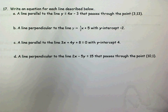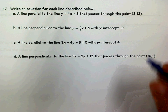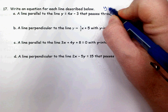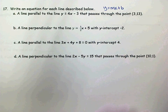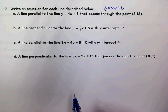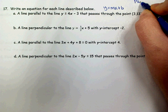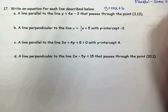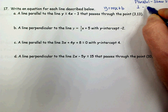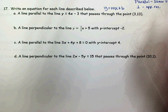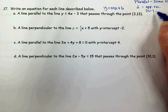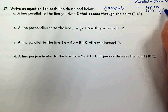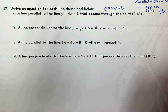On number 17, all four parts, you're writing an equation for each one of the lines described, and your answer needs to be in slope-intercept form. We're looking at the relationship of parallel and perpendicular lines. Parallel lines will have the same slope, whereas perpendicular lines will have opposite reciprocal slopes. That's two changes: you're changing the sign and you're flipping the fraction of the slope.